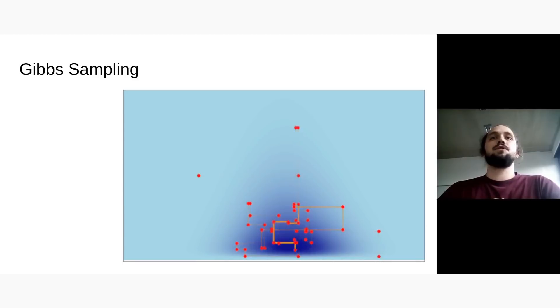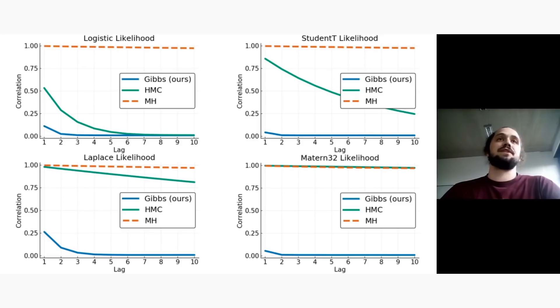And these full conditionals will help us in many ways for inference. We know them in closed form, so we can just directly get a Gibbs sampling algorithm. And this algorithm tends to be much more efficient than more classical methods like Hamiltonian Monte Carlo.